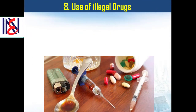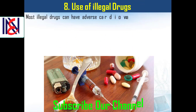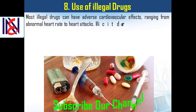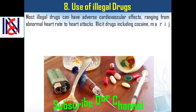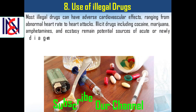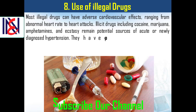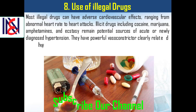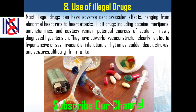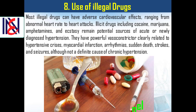Eighth, use of illegal drugs. Most illegal drugs can have adverse cardiovascular effects ranging from abnormal heart rate to heart attacks. Illicit drugs including cocaine, marijuana, amphetamines, and ecstasy remain potential sources of acute or newly diagnosed hypertension. They have powerful vasoconstrictive effects clearly related to hypertensive crises, myocardial infarction, arrhythmias, sudden death, strokes, and seizures, although not a definite cause of chronic hypertension.